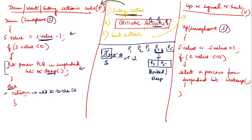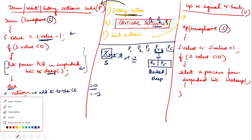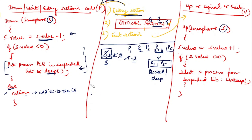Many exam questions relate to semaphore values: when the value is 0, no other process can enter the critical section because the value would be decremented and the if statement becomes true. If the semaphore value is minus 4, that means 4 processes are currently in the blocked or sleep state. This is the core interpretation of semaphore values.